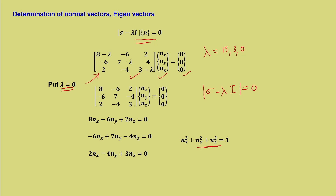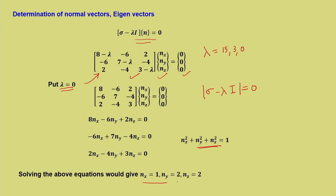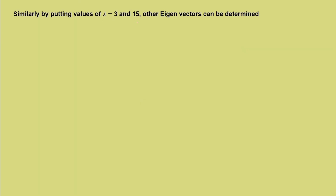Using these equations, we can solve for nx, ny, nz by putting lambda equal to 0. For lambda equal to 0, the system gives 8nx minus 6ny plus 2nz equal to 0, along with other equations. This gives nx equal to 1, ny equal to 2, nz equal to 2. Similarly, putting lambda equal to 3 and 15, the other eigenvectors can be determined, giving [2, 1, -2] and [2, -2, 1] respectively. This is how we find the principal stresses and the corresponding transformation matrix.